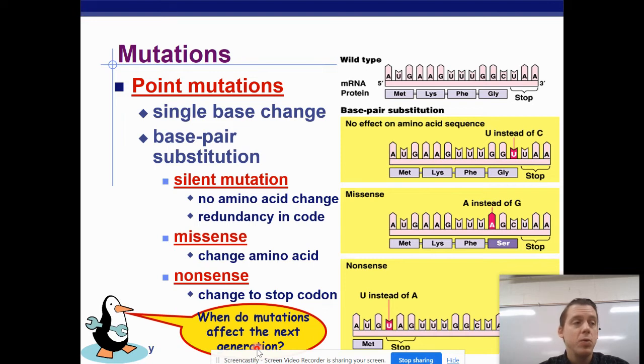Mutations can only affect the next generation if they affect your gametes, your sperm cells or egg cells. Those are the only cells of your cells that go on to affect the next generation. So any mutation to a sperm cell or an egg cell could in fact cause problems in the future.